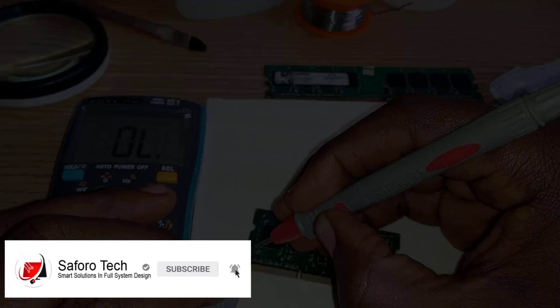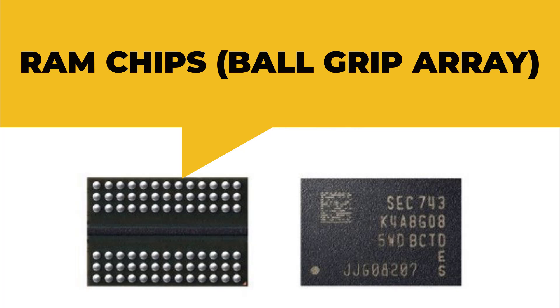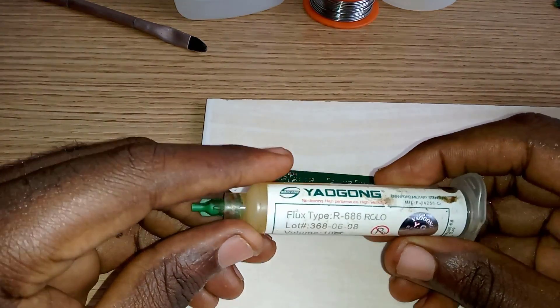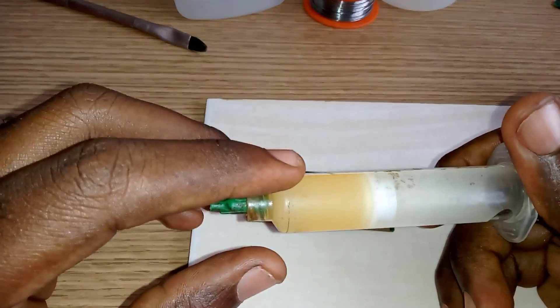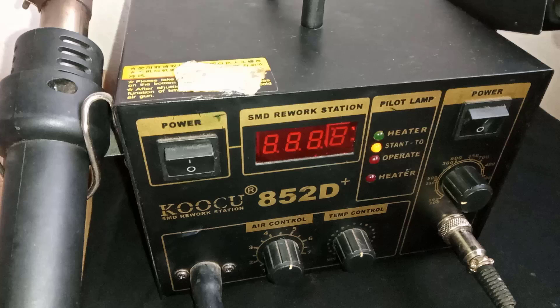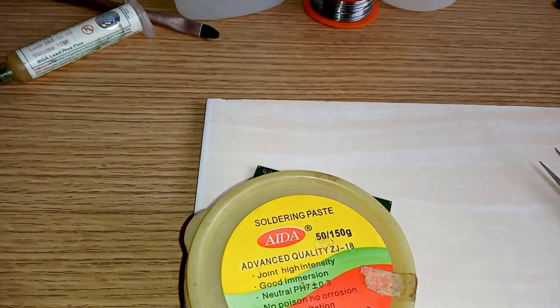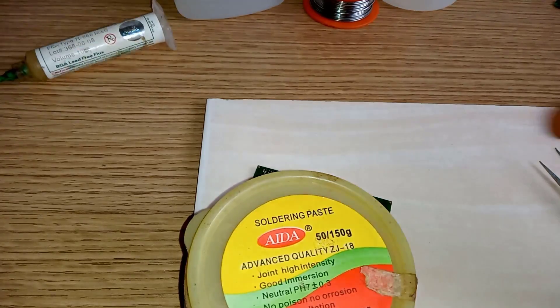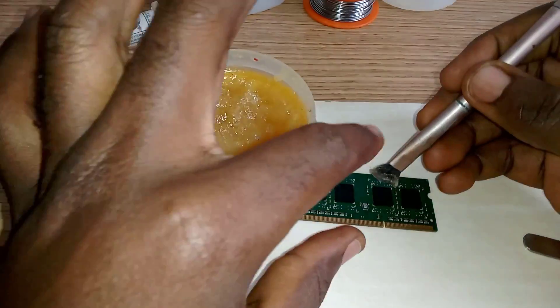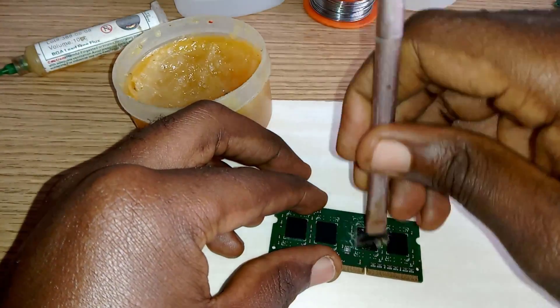If that also doesn't work, move on to the last method. You may need a soldering paste — you can use any of your choice — and a surface mount device rework station. This may help to reflow the communication contacts of the memory chip to the circuit board. Please ensure you use a reasonable amount of solder paste on the whole circuit board, as this will facilitate the reflowing process.